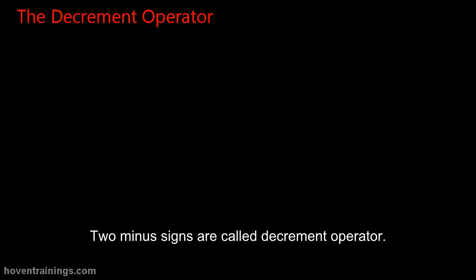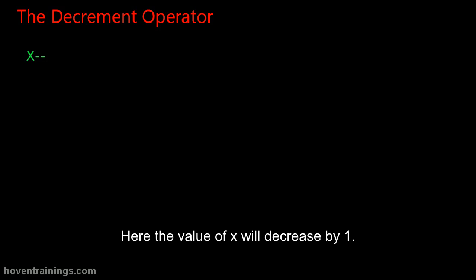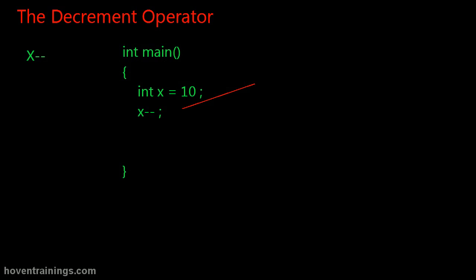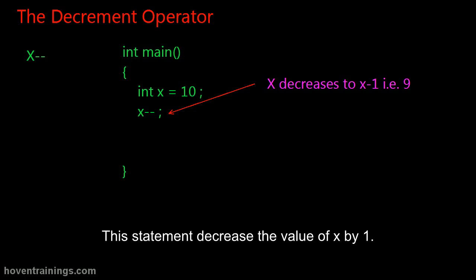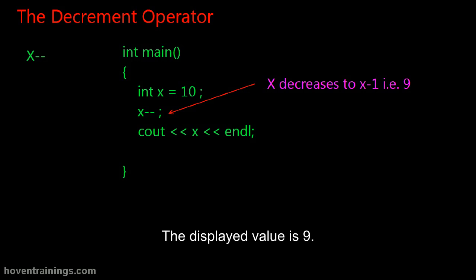Two minus signs are called the decrement operator. The decrement operator is used to decrease the value by 1. Here the value of x will decrease by 1. This statement decreases the value of x by 1. The displayed value is 9.